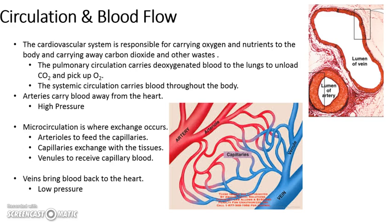Capillaries exchange blood with the tissues. Venules receive capillary blood, and arterioles feed the capillaries. Arteries go away, and veins bring blood back to the heart. Veins are under low pressure. The lumen or thickness of the artery is much thicker than that of veins, because arteries are under more pressure, so they have thicker walls, whereas veins are much thinner. You will get to see a segment of this under the microscope later in the unit.